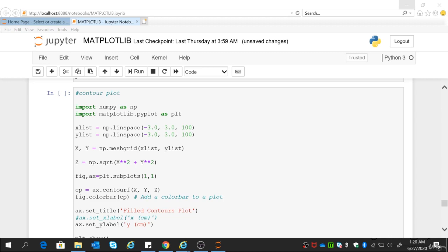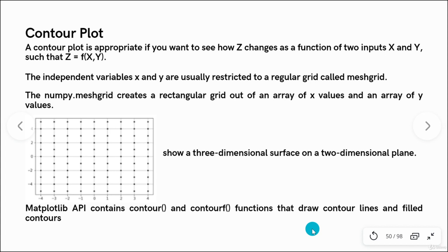Hello folks. In this session we would be discussing a very exclusive type of plot known as the contour plot — a very different type of plot. Let us first understand what a contour plot is all about and when we use it. You should use a contour plot when you want to see how a third variable changes as a function of two other variables, or how z changes as a function of two inputs x and y. So we should use a contour plot.